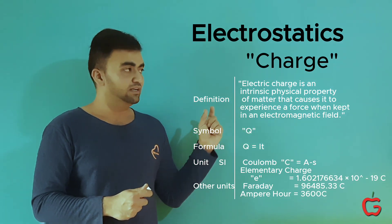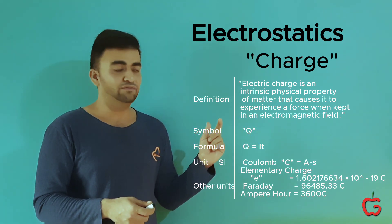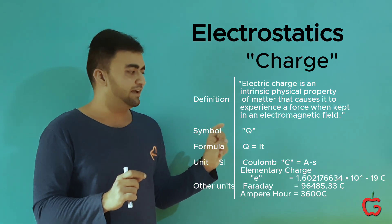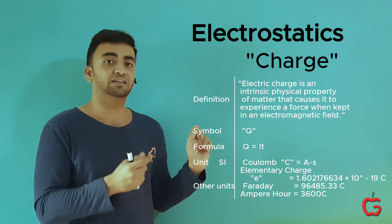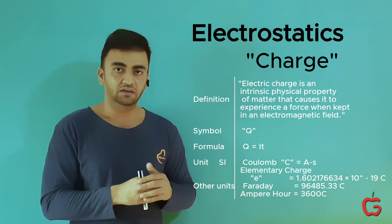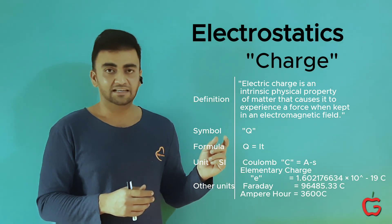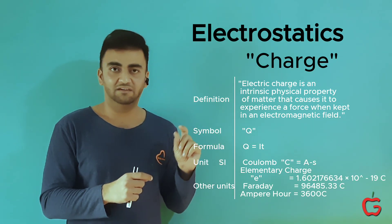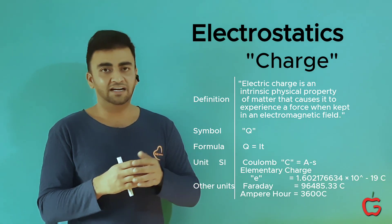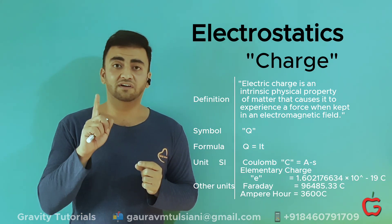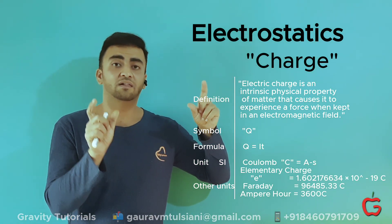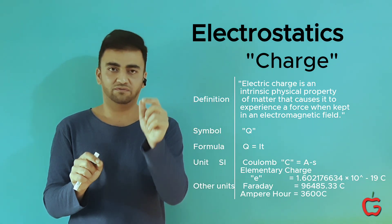The symbol for charge is Q. The fundamental formula for charge is Q = IT, where I is current and T is time. In SI units, charge is not considered fundamental — ampere and second are fundamental units. So the SI unit of charge is the ampere-second, also called the Coulomb. One Coulomb equals one ampere-second. Another popular unit is the elementary charge E — the charge of a proton, or the magnitude of an electron's charge — equal to 1.6 × 10⁻¹⁹ Coulomb. Another unit is the Faraday: 1 Faraday is the total charge of one mole of protons, that is 6.023 × 10²³ protons, coming out to 96,485.33 Coulombs.